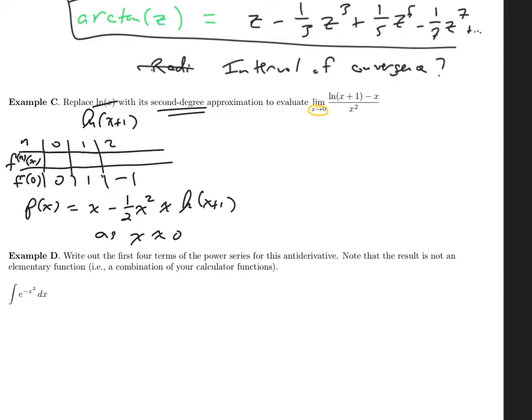So that all allows us to do this trick, which is these are not algebraically equal, but they're going to be equal in the limit, because the limit is letting x get arbitrarily close to zero. So in the limit, I can replace the log of x plus one with its polynomial approximation.